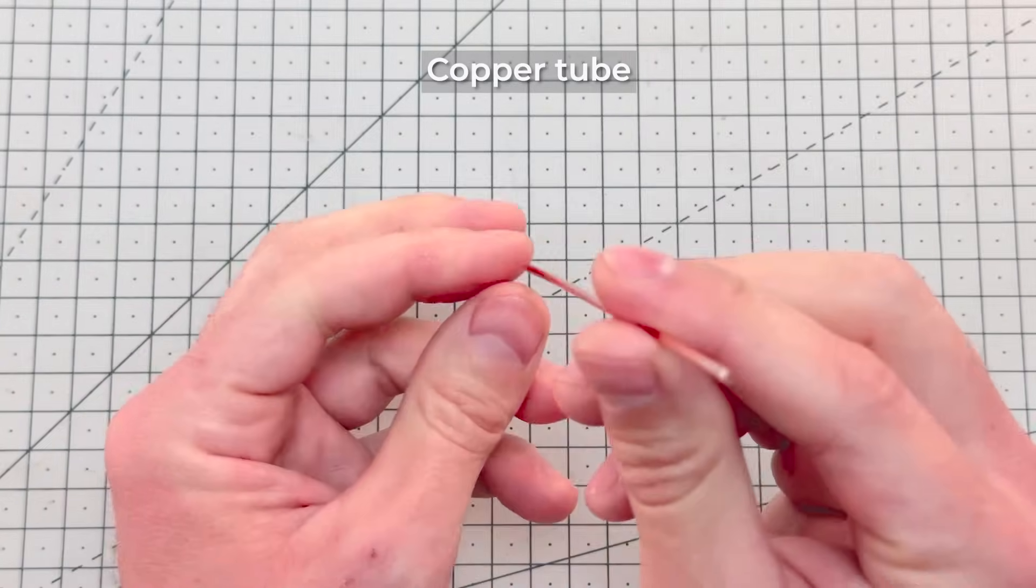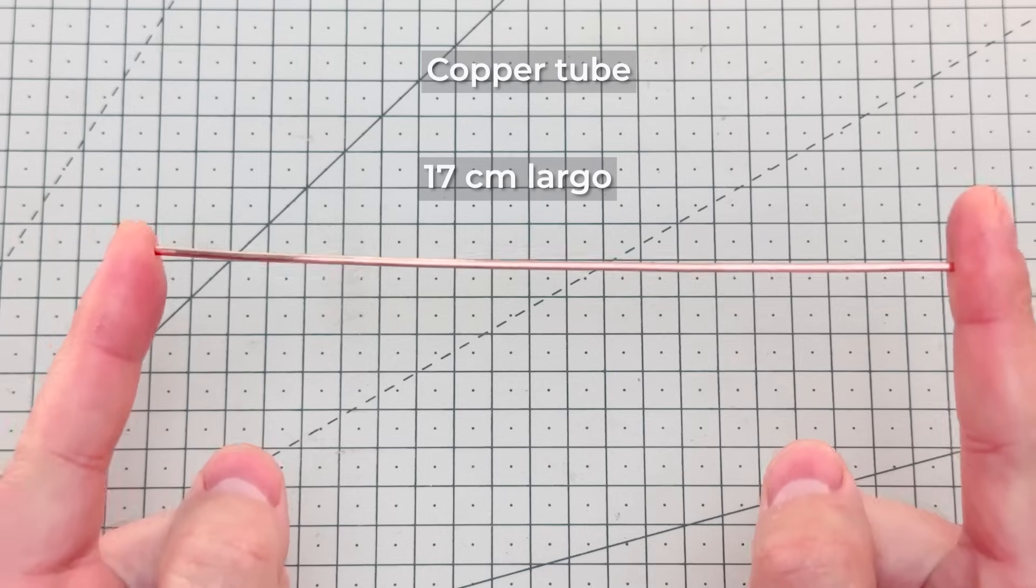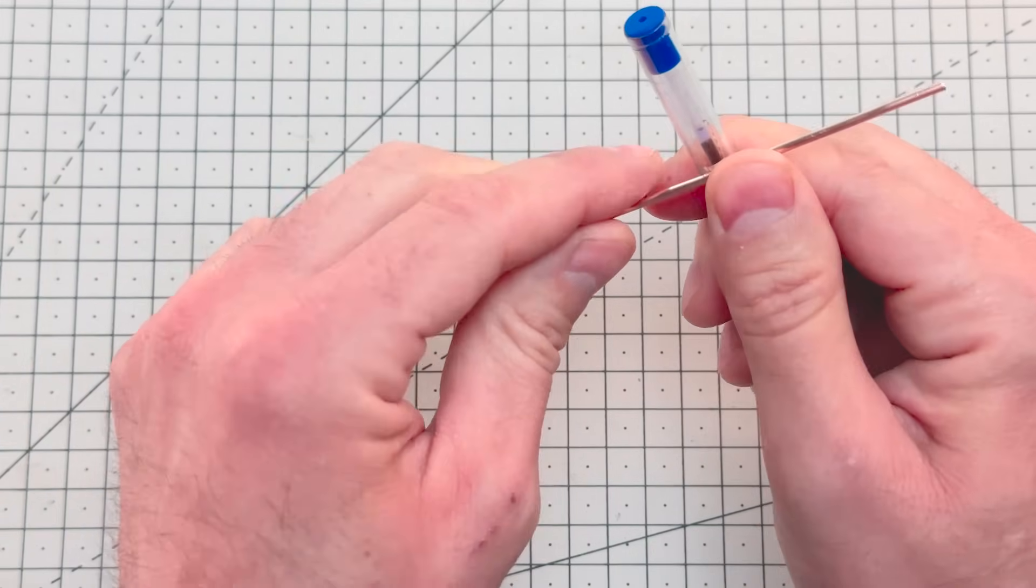Now we're going to take a copper tube called a capillary tube. This small tube will create a sudden pressure drop in the evaporator, which will produce the cooling effect.